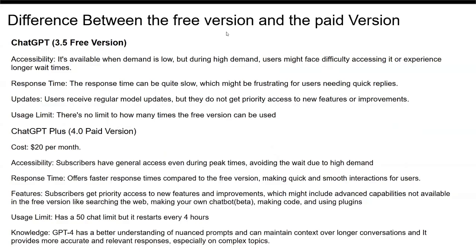The difference between the free version and the paid version. The ChatGPT free version — accessibility: it is available when demand is low, but during high demand users might face difficulty accessing it or experience longer wait times. Response time can be quite slow, which might be frustrating for users needing quick replies. Users receive regular model updates but do not get priority access to new features or improvements.